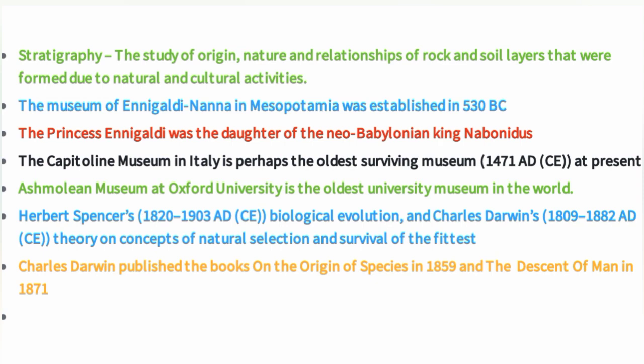Herbert Spencer introduced the concept of biological evolution. Charles Darwin published 'On the Origin of Species' in 1859 and 'The Descent of Man' in 1871.